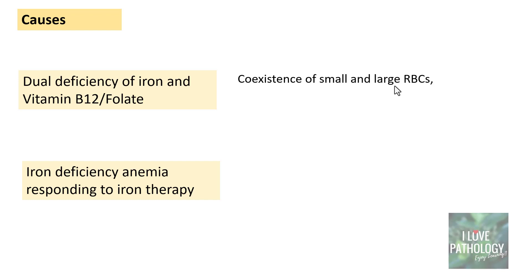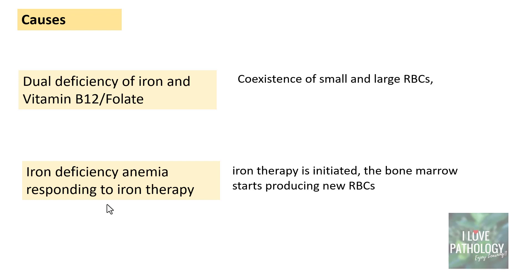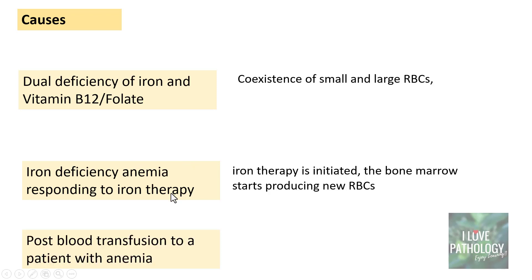The second important cause is a case of iron deficiency anemia responding to treatment. During the process of treatment, the bone marrow responds and starts producing newer RBCs. Initially these RBCs are larger in size — basically polychromatic cells — so you find two different populations: the native microcytic hypochromic RBCs and the relatively larger population of reticulocytes or newer RBCs. That's another cause of dimorphic blood picture: iron deficiency anemia responding to iron therapy.